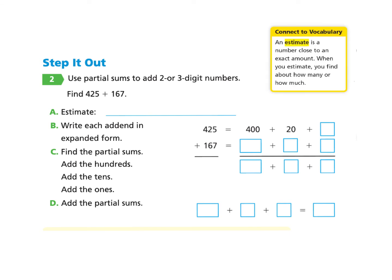Let's remember that an estimate is a number that is close to the exact amount. When you find an estimate, you find about how many or how much. So if you would like to pause and try part A, which is to write an estimate for 425 plus 167, you can do so and come back.